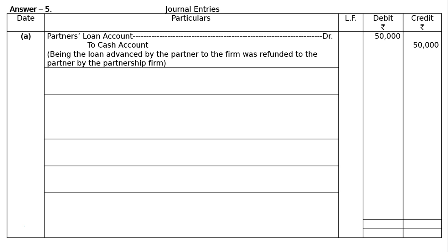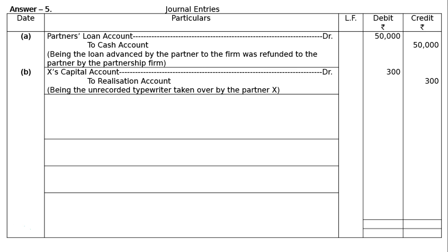Part B: Partner X takes an unrecorded asset — a typewriter — at rupees 300. X's capital account is debited to realization account, rupees 300 each in both the debit and credit columns, being the unrecorded typewriter taken over by partner X.